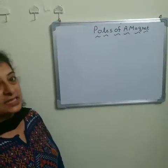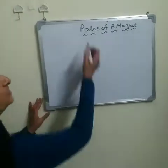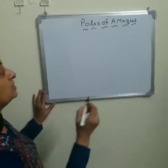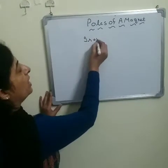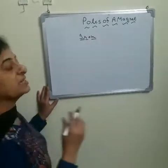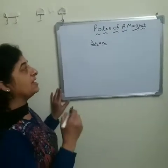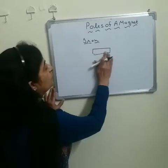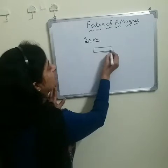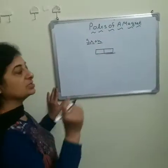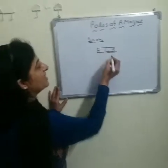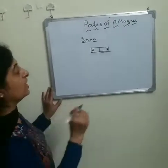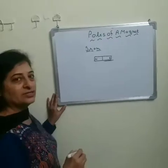Now we will discuss about the poles of a magnet. A magnet is any object which attracts iron, nickel, and cobalt towards it. Each and every piece of magnet, even a small piece, has two poles. There are always two poles of a magnet: north pole and south pole. The maximum attraction power of a magnet is at its poles.